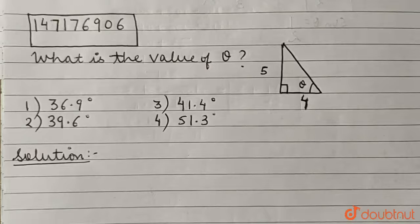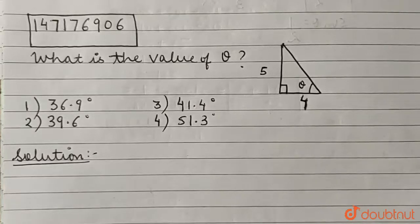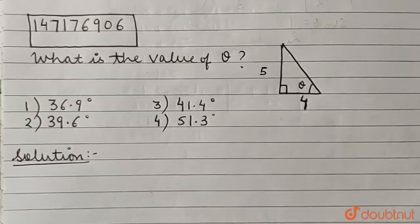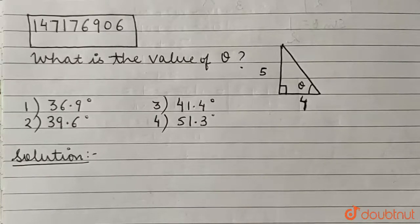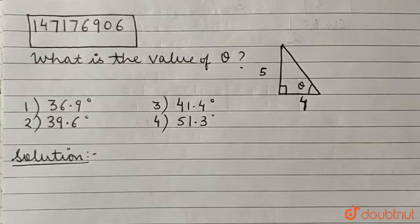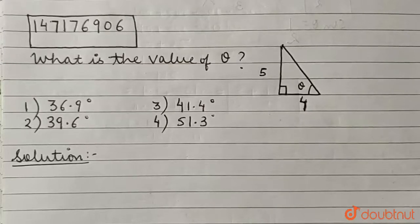What is the value of theta in the given figure? We have four options. Option 1: 36.9 degrees. Option 2: 39.6 degrees. Option 3: 41.4 degrees. Option 4: 51.3 degrees.